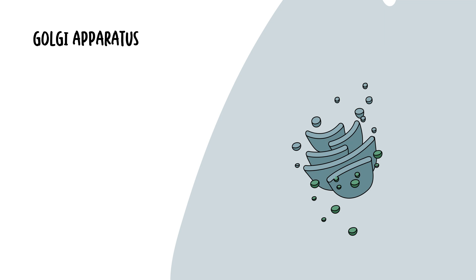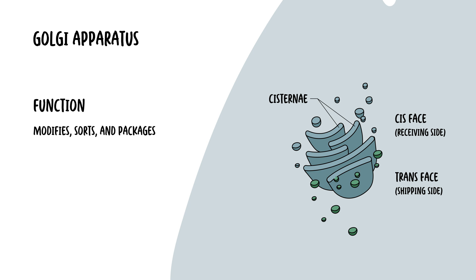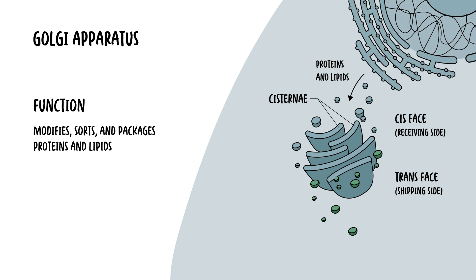Which takes us to the Golgi apparatus. The Golgi apparatus is an organelle that consists of a series of flattened membrane-bound sacs called cisternae. It has a distinct polarity with a cis face, which is the receiving side, and a trans face, the shipping side. The Golgi apparatus modifies, sorts and packages proteins and lipids received from the endoplasmic reticulum.